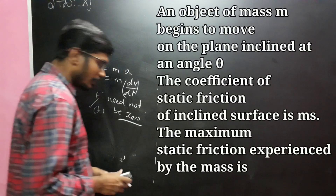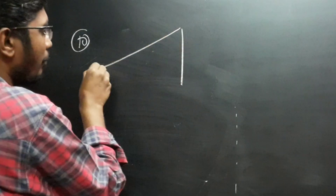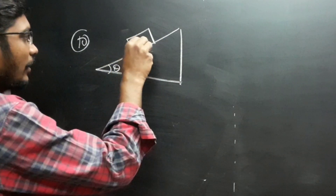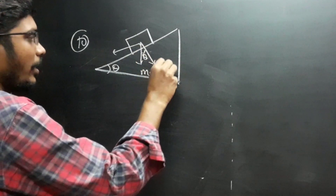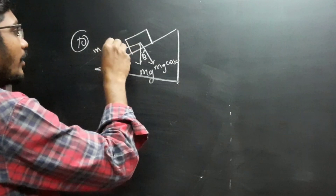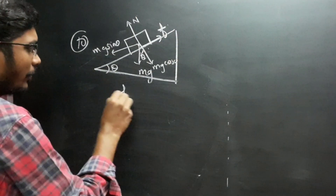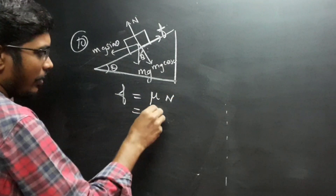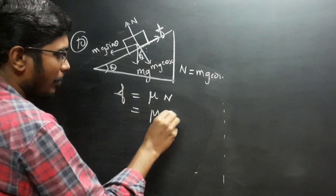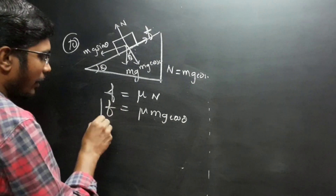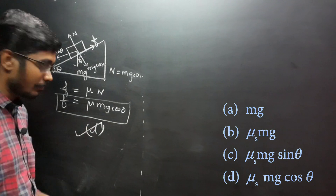Question 10: An inclined plane with a block. The angle of inclination gives weight component Mg sin θ along the plane and Mg cos θ perpendicular. Normal force equals Mg cos θ. Friction force formula is μ into N, which equals μMg cos θ. Option D is the correct answer for frictional force on the inclined plane.